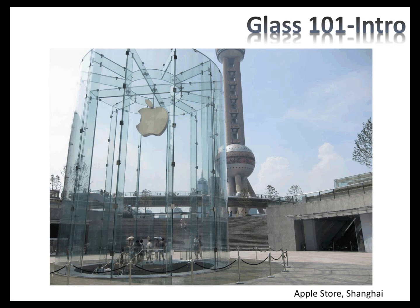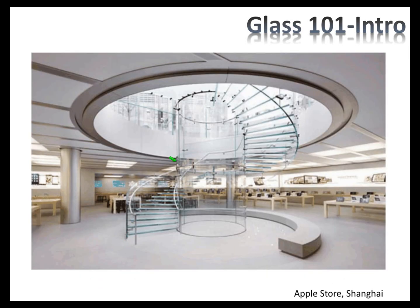This Apple store in Shanghai is a particularly good example of all the different types of elements you can use in a structural glass application. Here we have curved glass wall elements, glass column elements, glass beam elements across the roof, and glass roofing elements. This is the entry to the store, and as you walk down and in, there is a continuation of glazing with a curved glass stringer and glass tread elements — glass in all forms.